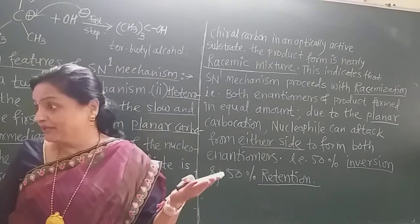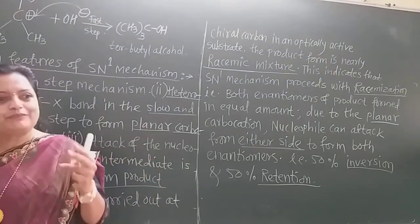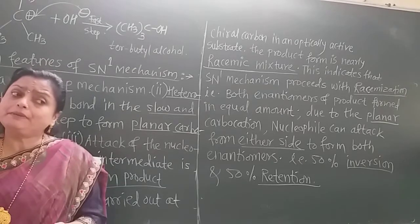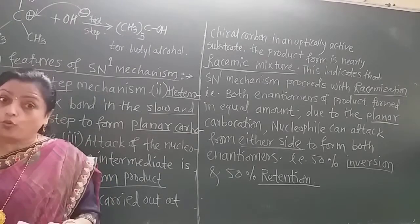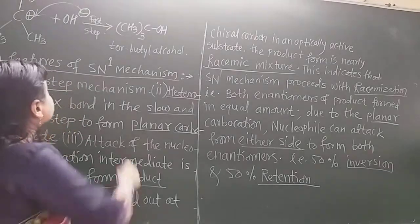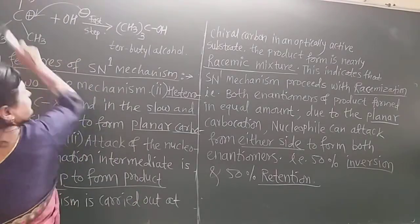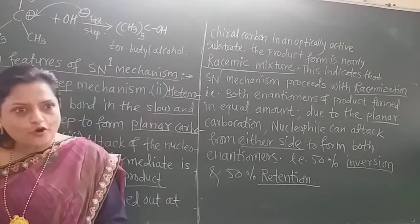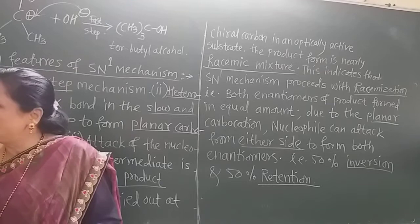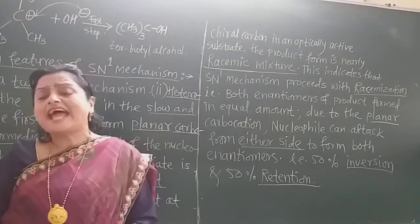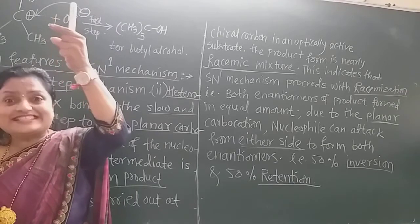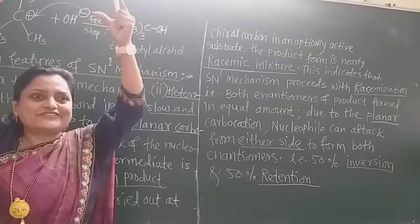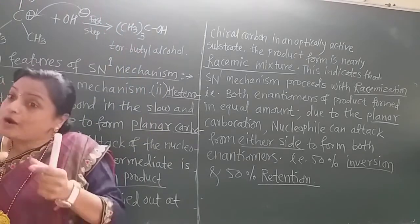A racemic mixture has dextrorotatory and levorotatory components at 50-50%. Why? Because the OH minus can attack from either side. So, 50% of molecules have inversion of configuration and 50% have retention. Inversion is like an umbrella opening in the opposite direction due to strong wind — it flips to the opposite configuration.